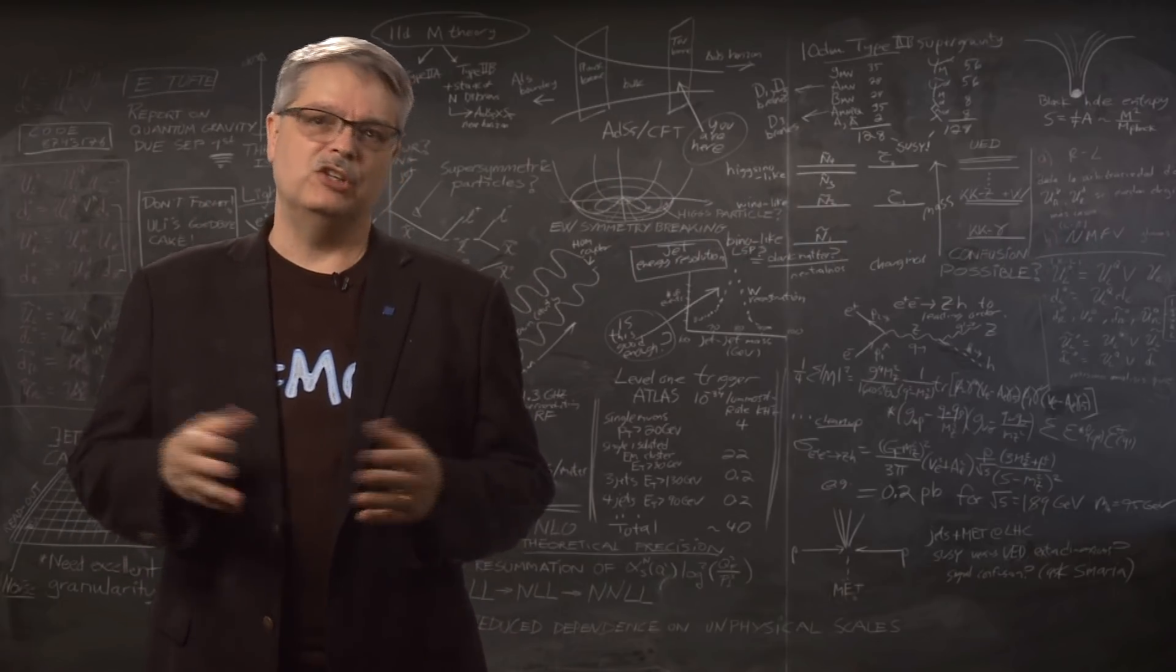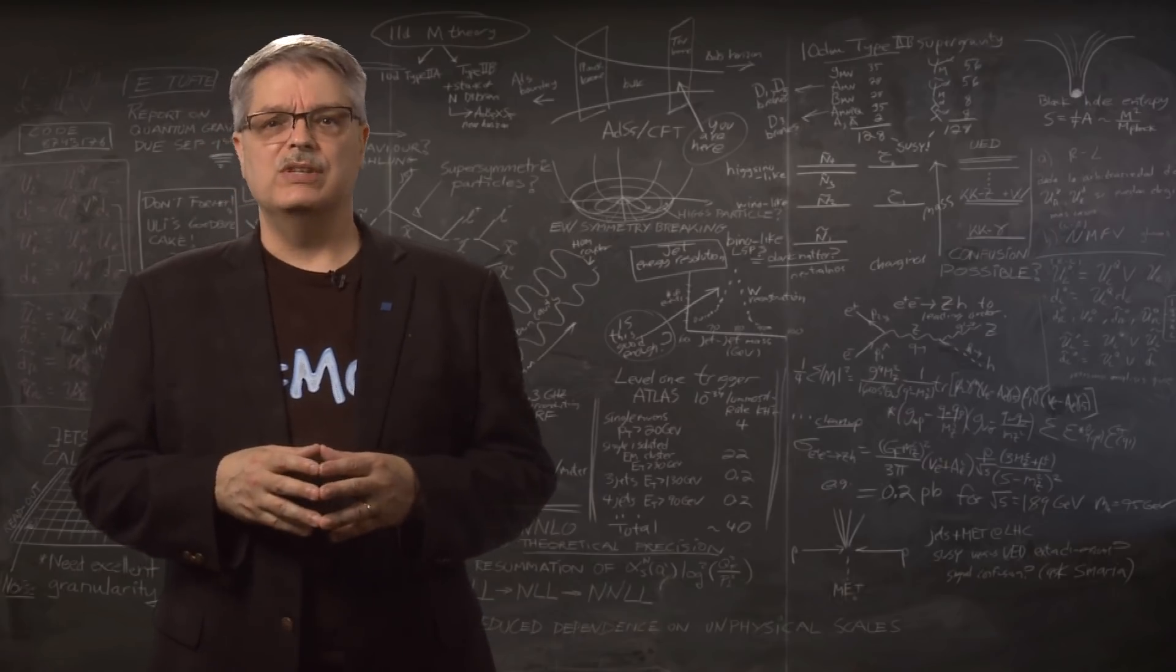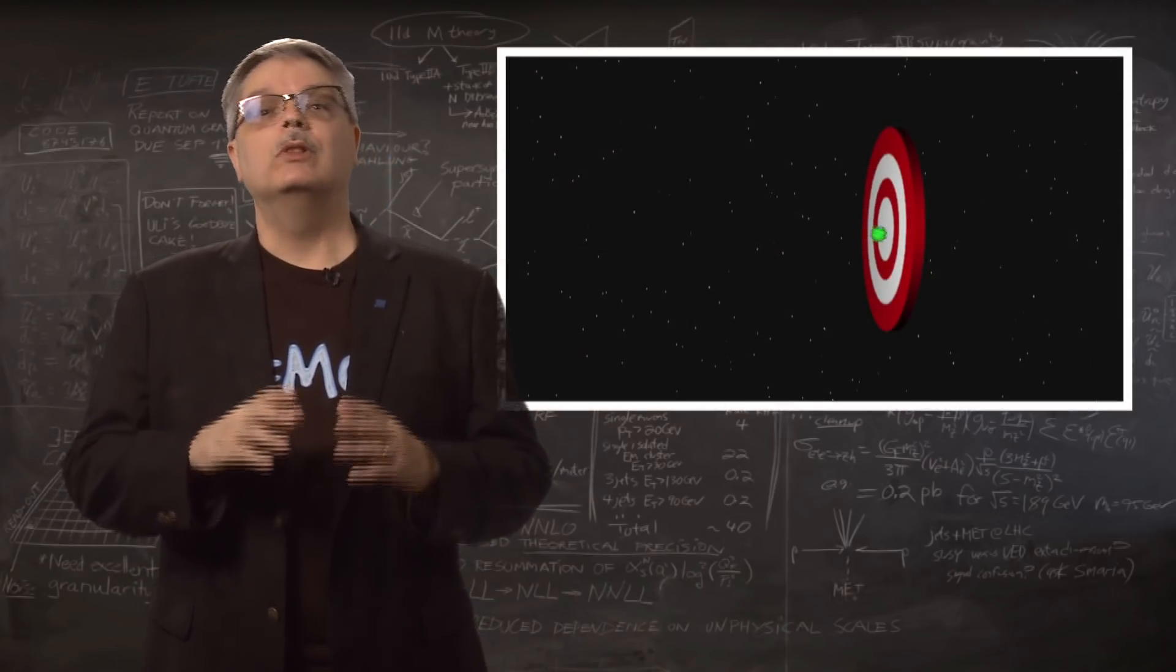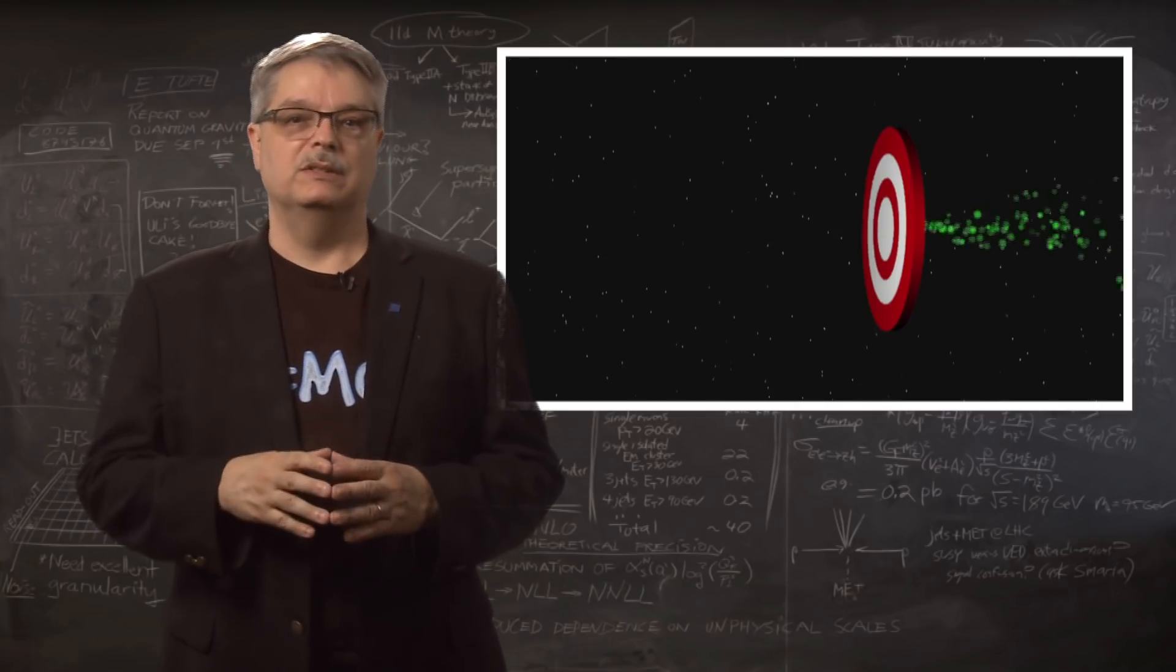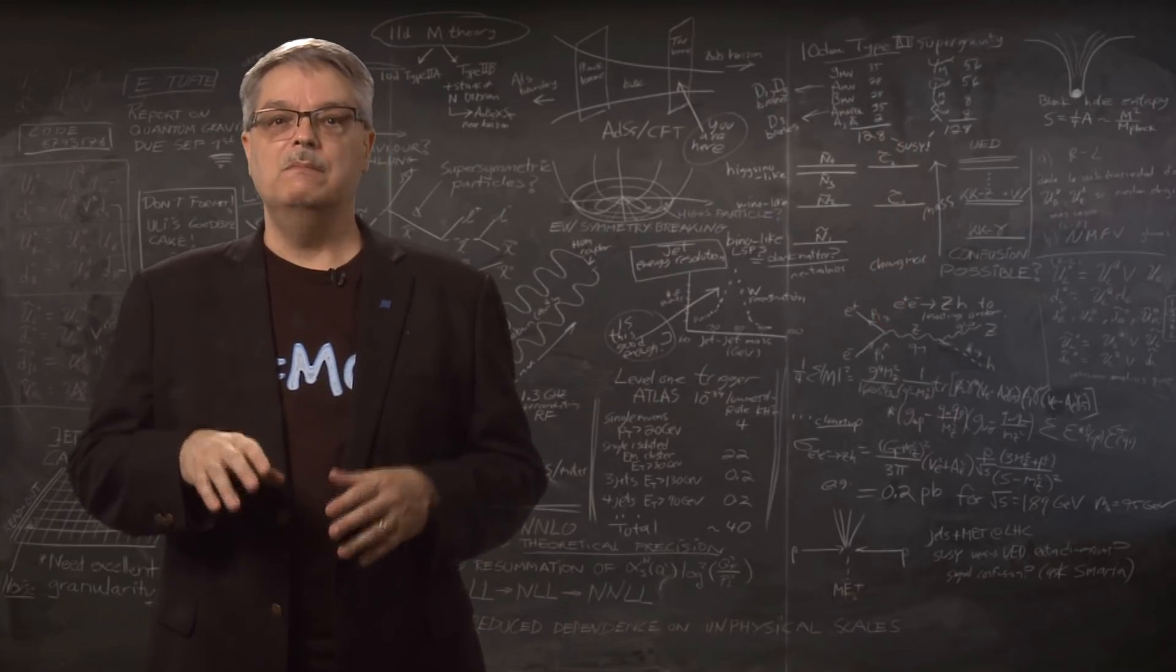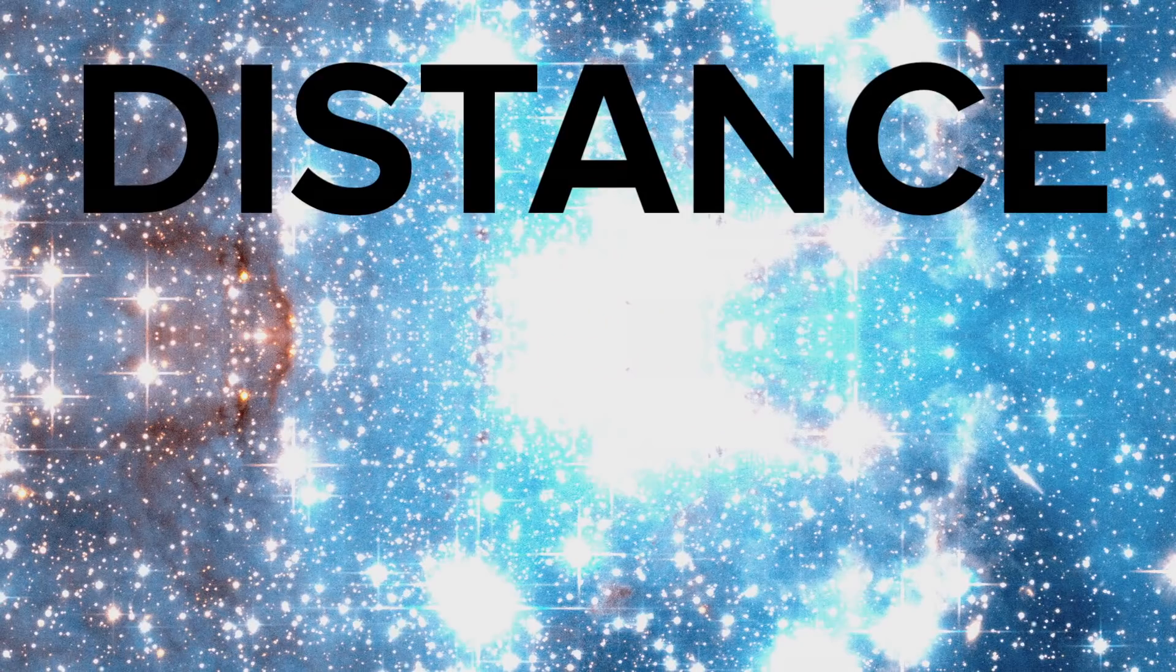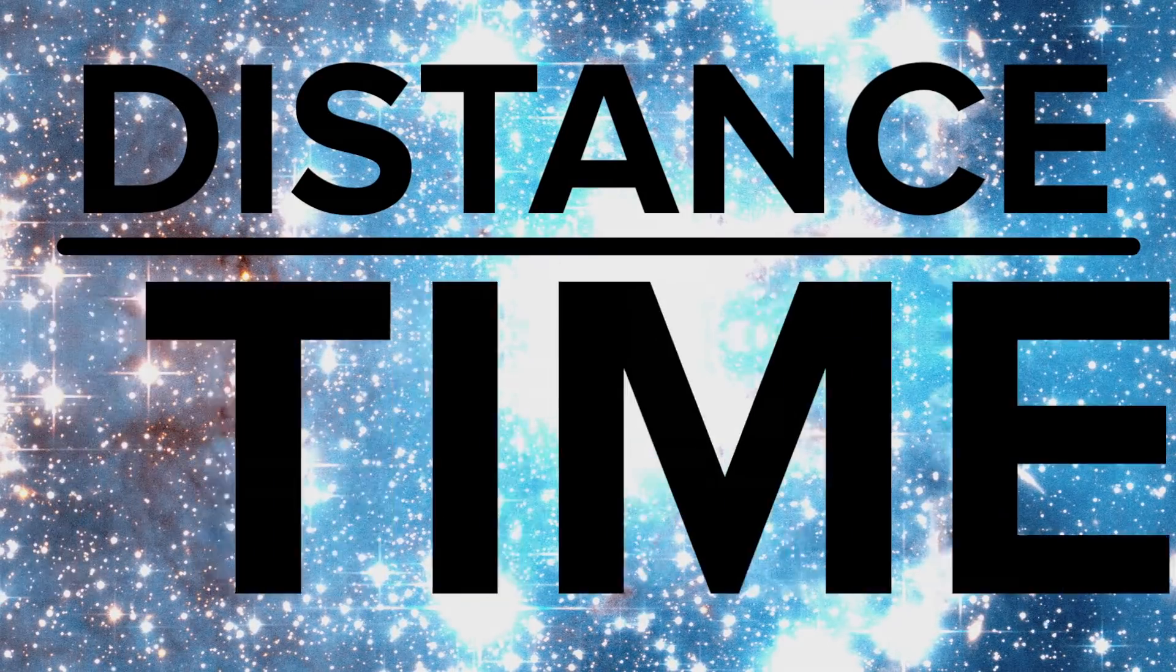Now, we don't intentionally make stationary pions very often. It turns out that they just aren't all that useful. Instead, we make them with lots of energy and they're going very fast. We can measure their speed by just measuring how long it takes them to travel some known distance. Take the distance and divide by the time and you get the velocity.